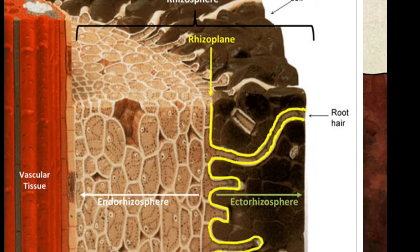The rhizoplane is simply the boundary between the endorhizosphere and ectorhizosphere. The endorhizosphere ends at the endodermis, and the rhizoplane is present in the ectodermis area — just a small line between the two zones. The third part, the ectorhizosphere — 'ecto' means outside — is the area immediately next to the rhizoplane, that is, immediately next to the root surface.